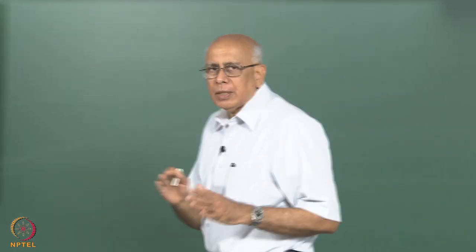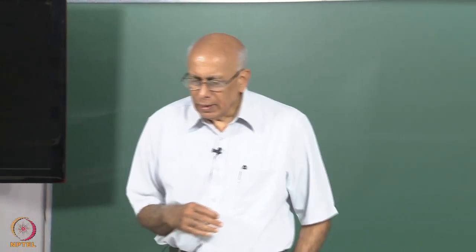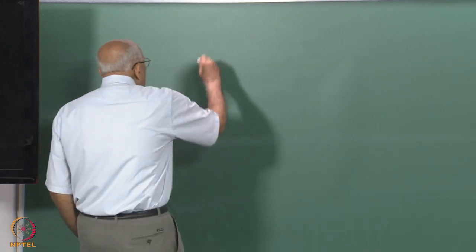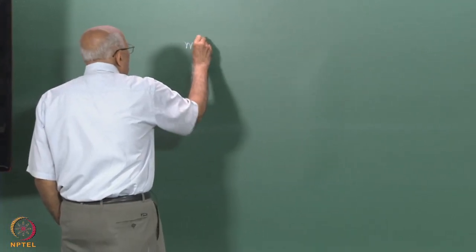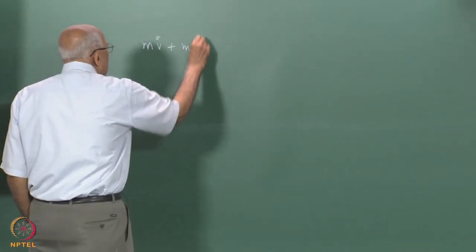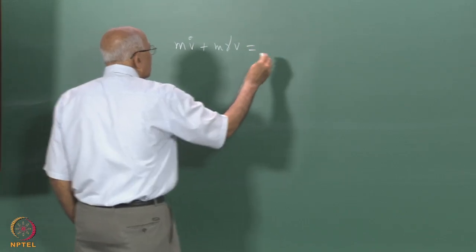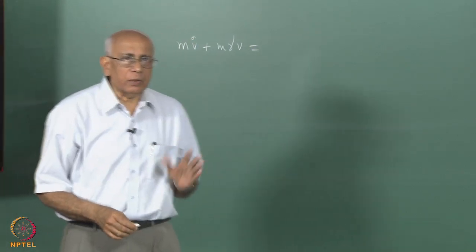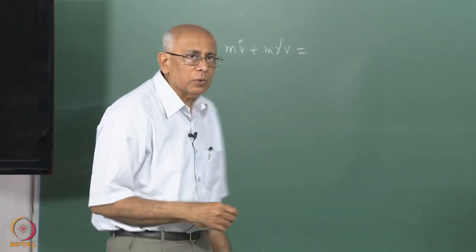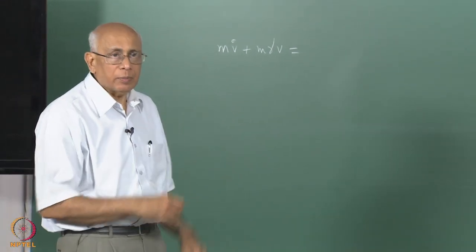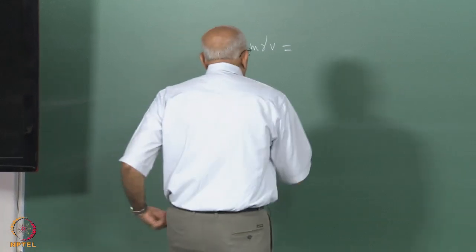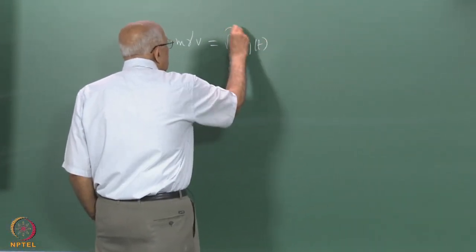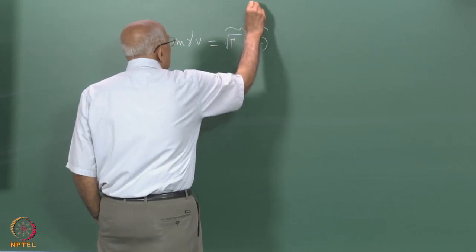Let us put this in a slightly more general footing. To refresh your memory, the Langevin equation we wrote down was m·v̇ + m·γ·v equal to the force on the right-hand side. This force we took to be a random fluctuating force in the absence of any external force. There was this square root of γ times η(t) — this was the fluctuating random force.